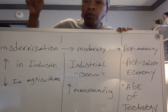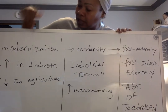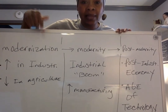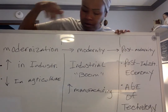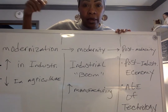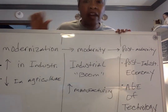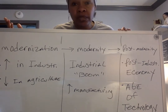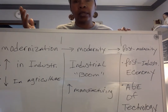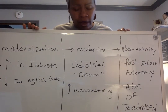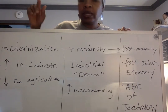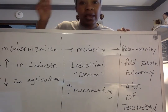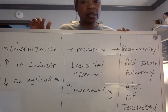We have modernization, which was the decline of agriculture when we were an agrarian society and a rise in industry — the beginning of the industrial age. Then in the middle we have modernity, which refers to the industrial age or the age of industrialization, and a rise in manufacturing. We stopped making things by hand and started making things with machines and in factories during the industrial age.